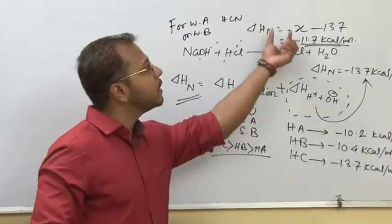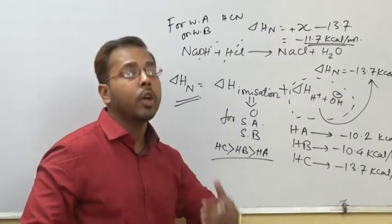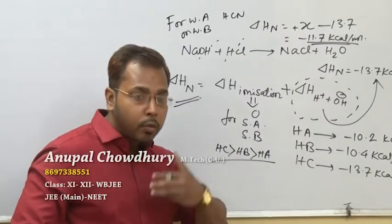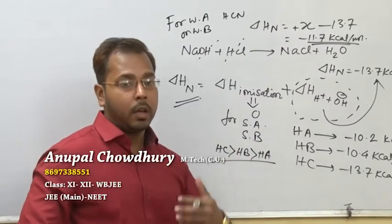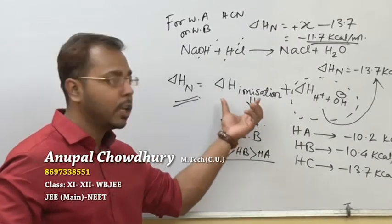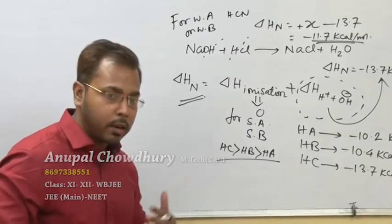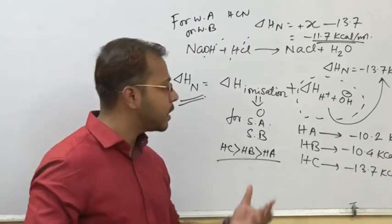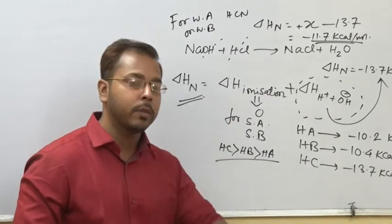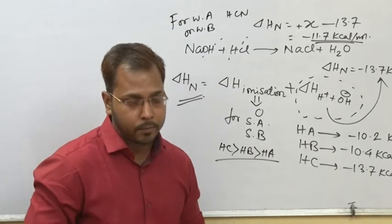HC has the lowest (most negative) value, meaning it requires the least ionization energy — so it is the strongest acid. As the heat of neutralization value becomes less negative, more ionization heat is needed for weak acids and weak bases, and therefore the values will be in decreasing order of acidity.